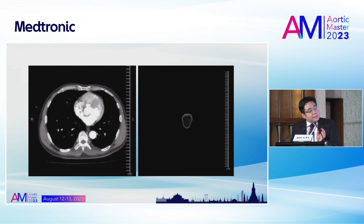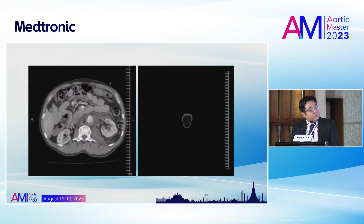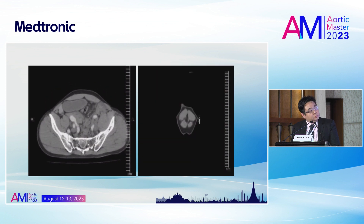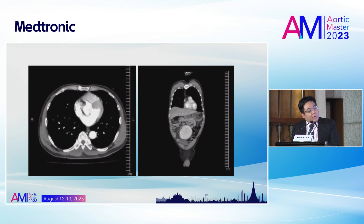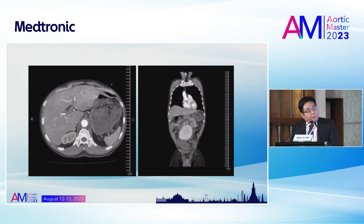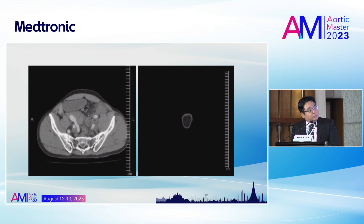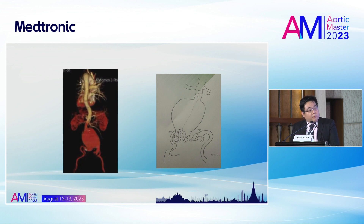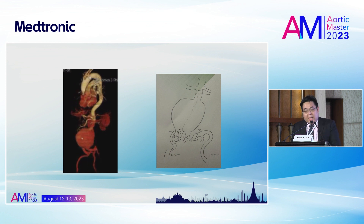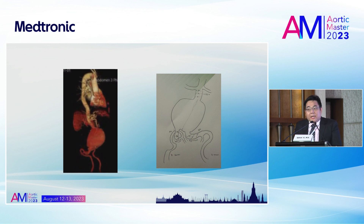Another situation: this is the case of a ruptured abdominal aortic aneurysm, where the iliac artery had severe tortuosity. On the left side, there was a very, very true curve of the iliac tortuosity. On both the right side and the left side, I planned to insert the main body.